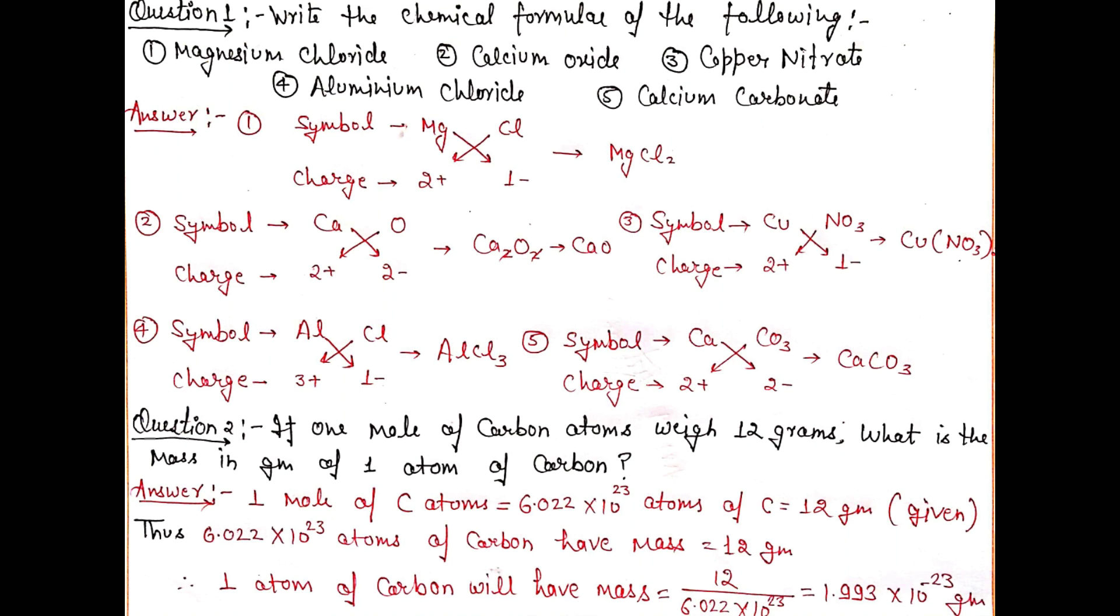Question 2: If one mole of carbon atoms weighs 12 grams, what is the mass in grams of one atom of carbon? One mole of carbon atoms contains 6.022 × 10^23 atoms, which has mass 12 grams as given. So 6.022 × 10^23 atoms of carbon have mass 12 grams. Therefore, one atom of carbon will have mass calculated as 1.993 × 10^-23 grams.